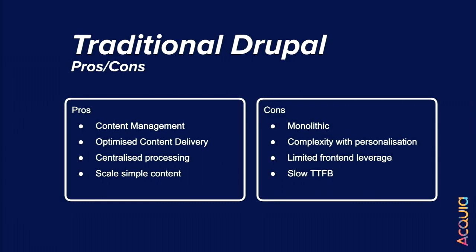So how does Drupal stack up against this? There are pros and cons. Pros: it's really good at content management, we've got optimised content delivery down, it does centralised processing, and it can scale simple content really well — we've nailed that. The cons today: it's monolithic, it has complexity ingrained around personalisation, very limited front-end leverage, and that slow time-to-first-byte still persists — even though in a probability sense it's been dramatically reduced.